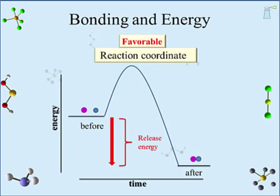Reactions that release energy are referred to as favorable — that just means they are likely to occur. It says nothing about how fast the reaction will occur. Another feature of the reaction coordinate is called the activation energy: the addition of energy to the reactants to get the reaction to proceed. In our reaction of separate atoms forming a bonded pair, the additional energy needed is small and can come from the motion of the atoms.